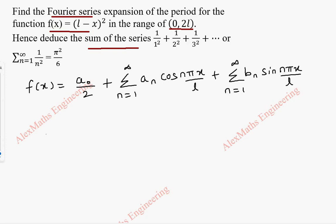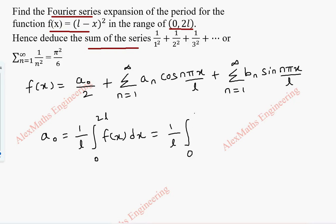Now a0: the formula is (1/L) integral from 0 to 2L of f(x) dx. We are going to substitute f(x), so it is (1/L) integral from 0 to 2L of (L minus x) whole square dx.